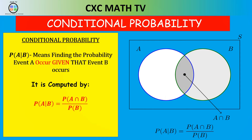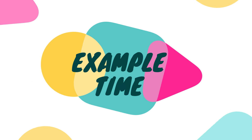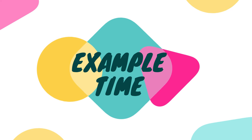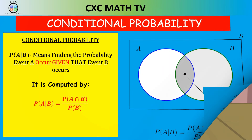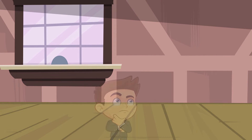So the probability of A given B equals the probability of A∩B divided by the probability of B. Let's do some examples to see how we compute conditional probability.